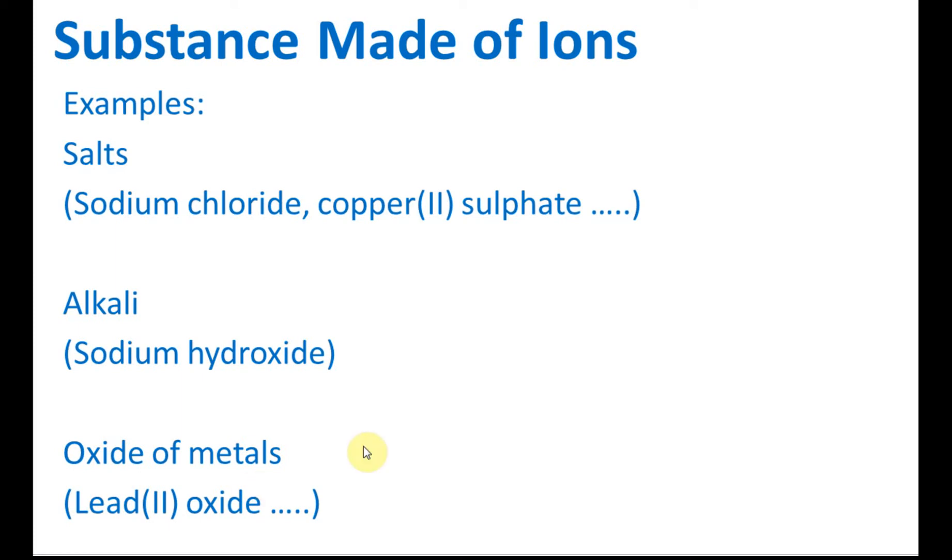How do we know the substance is made of ions? First, you need to see whether it's salt, alkali or oxides of metals. And second, you check whether it's combinations of metals and non-metals or not. If it's a combination of metals and non-metals, then usually there are ionic compounds.